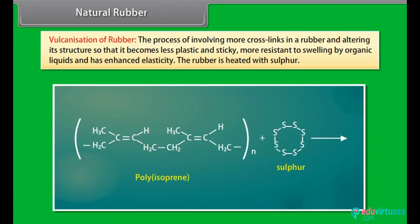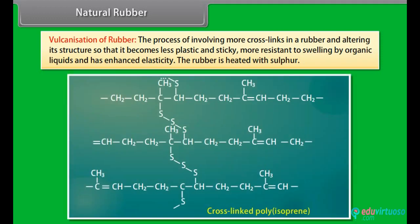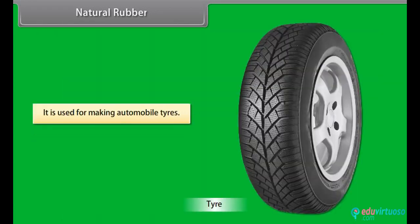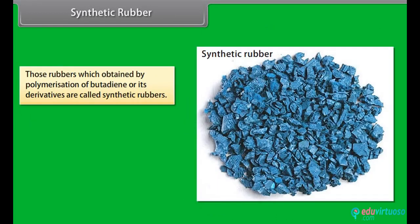Vulcanization of rubber: the process of introducing more cross-links in rubber and altering its structure so that it becomes less plastic and sticky, more resistant to swelling by organic liquids, and has enhanced elasticity. The rubber is heated with sulfur. It is used for making automobile tires.